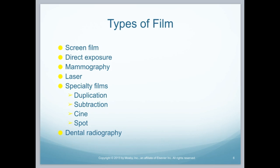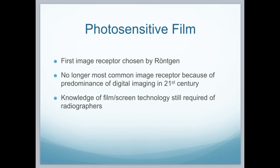Let's look at the types of films we'll be talking about today. Good old screen film, what we know from the past. We have direct exposure, mammography film, laser film. Specialty films include duplication, subtraction, cine, and spot film, and then we have a special film for dental radiography. It only makes sense that Röntgen was the one to choose the first type of image receptor. He was doing these experiments with phosphorescence and radiation. As we go along in the 21st century, we see that the film as an image receptor is giving way to the digital imaging world.